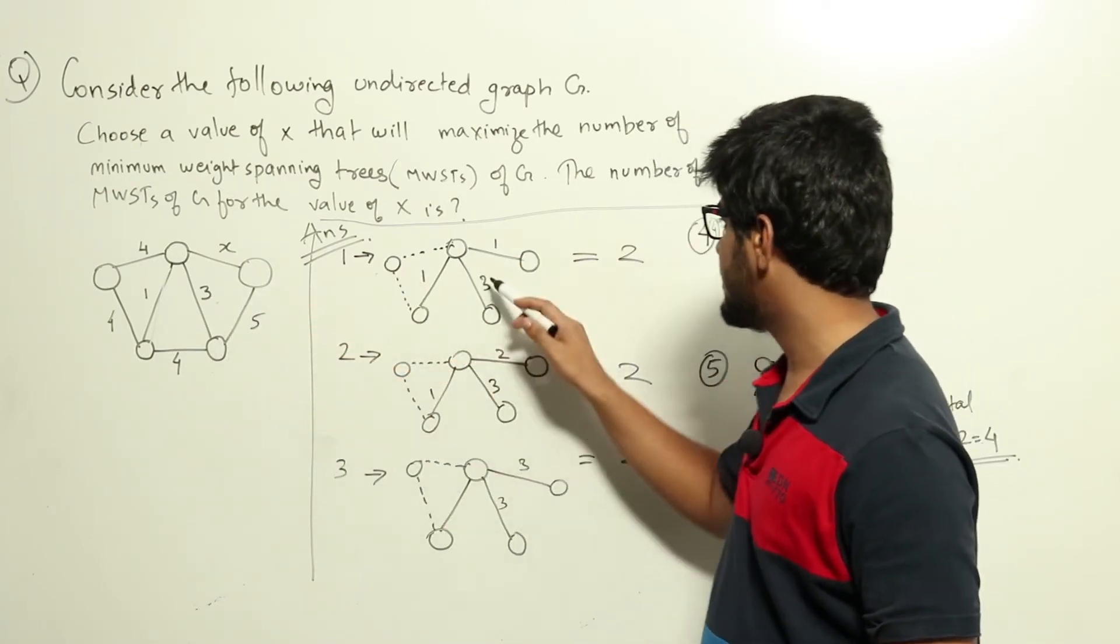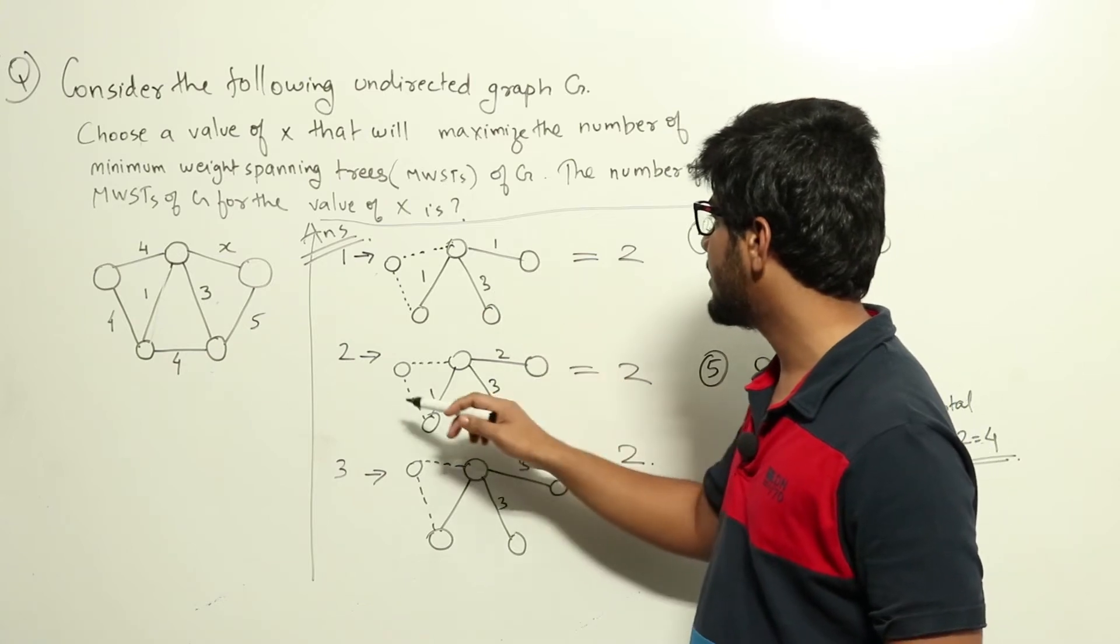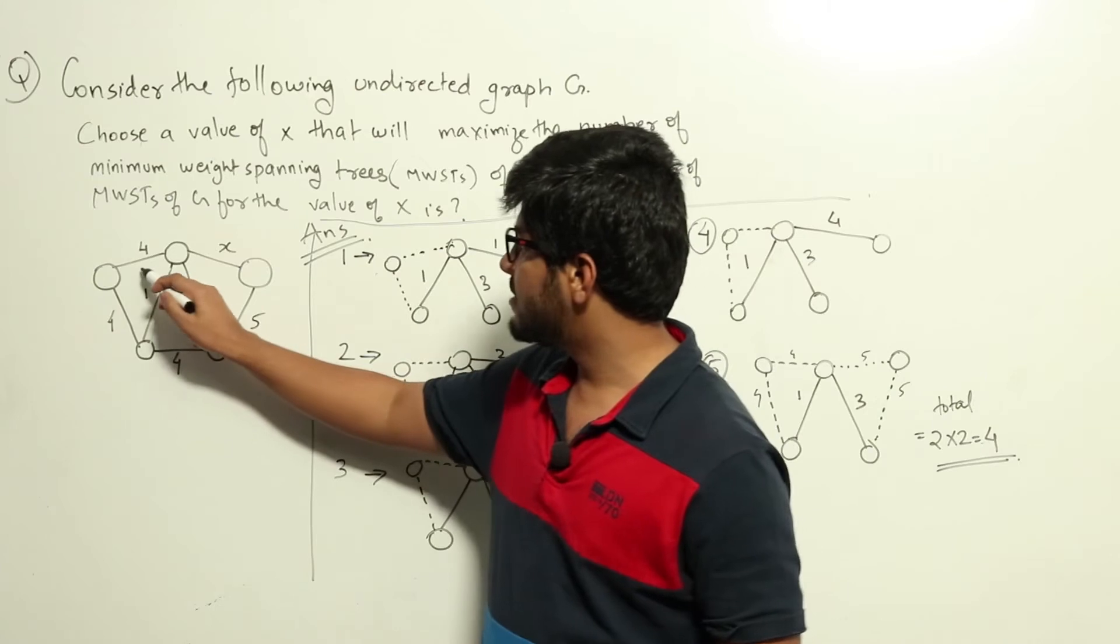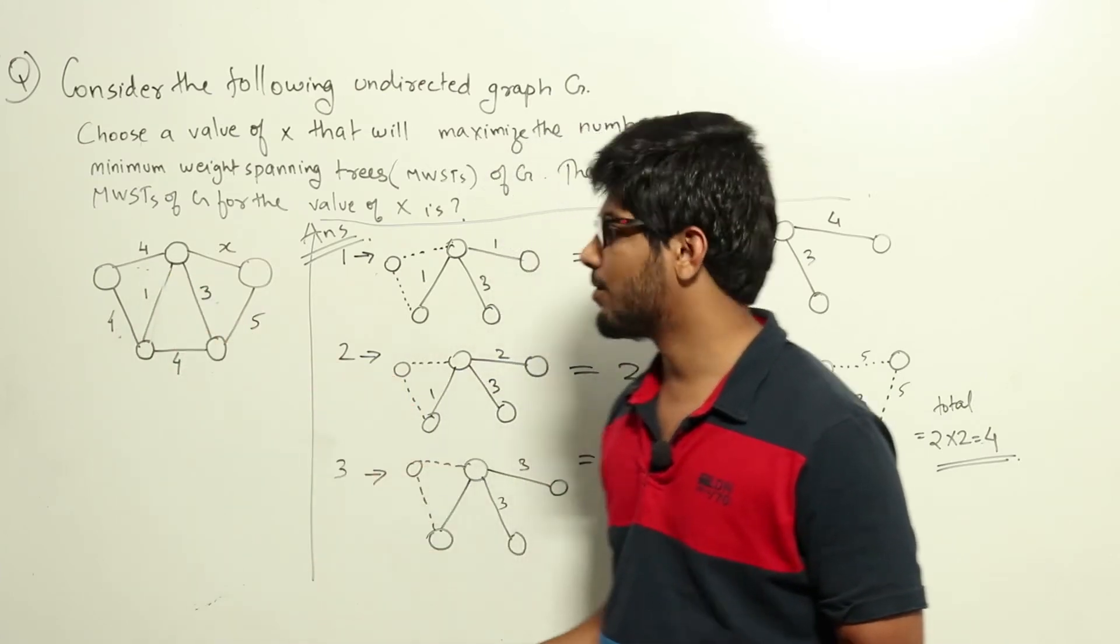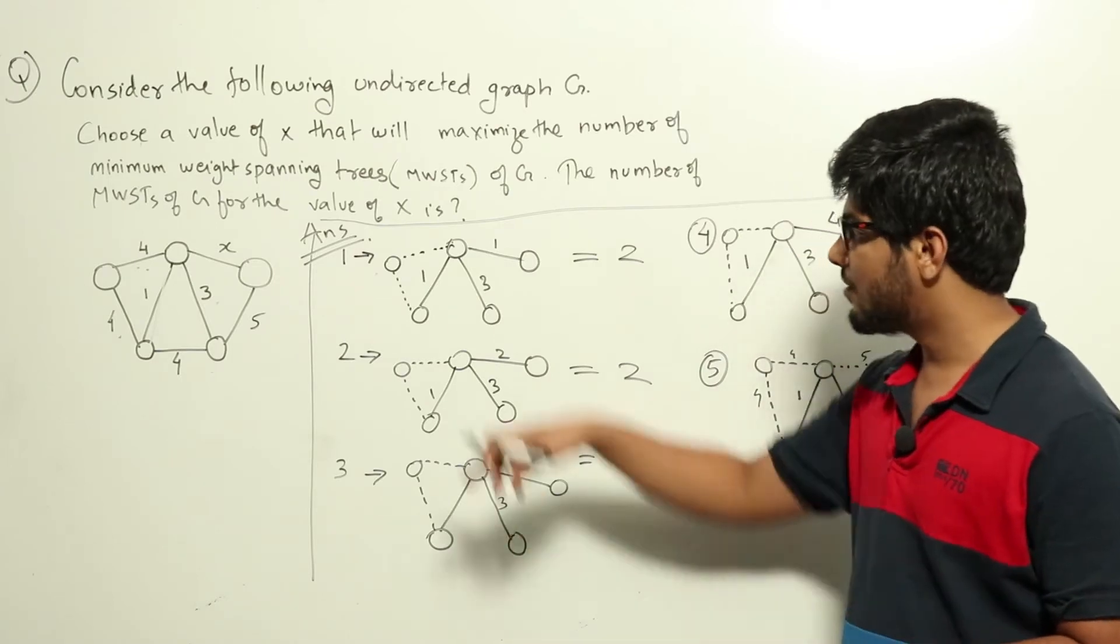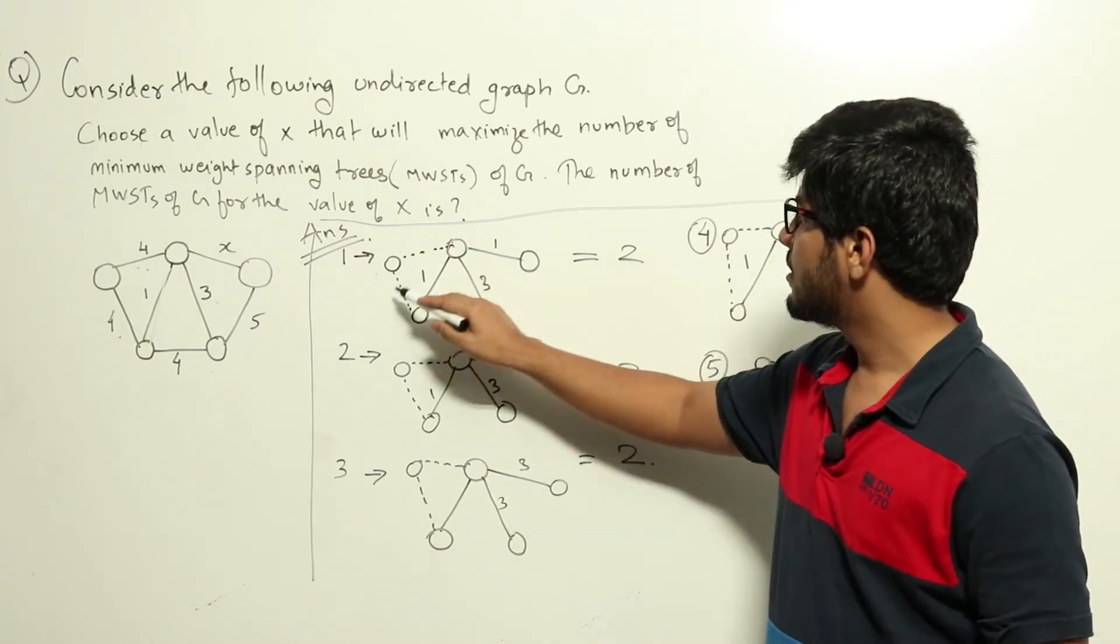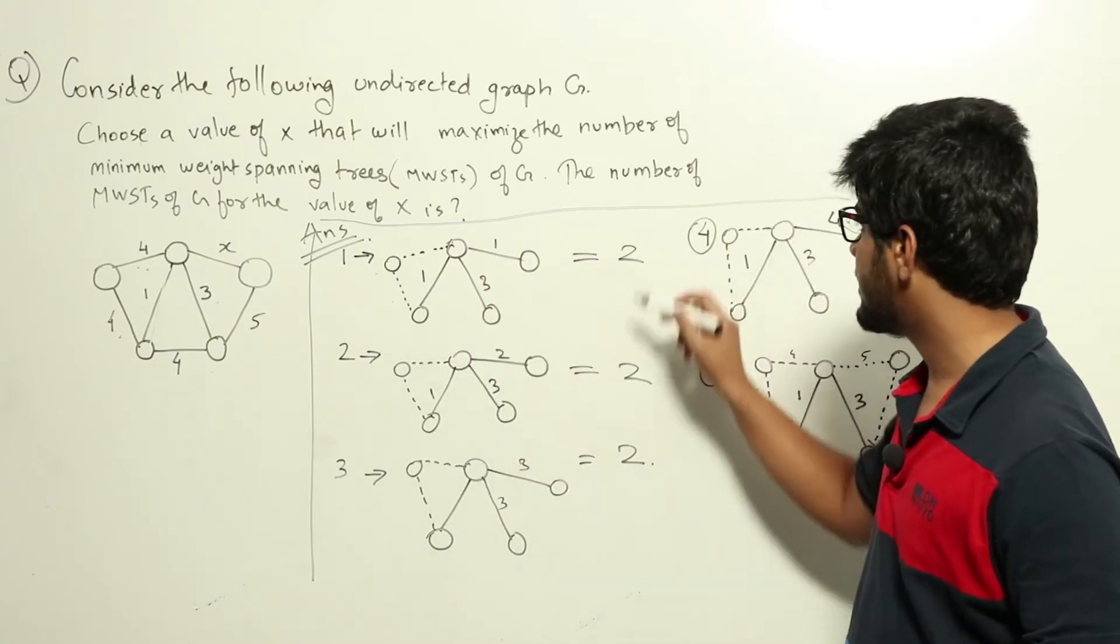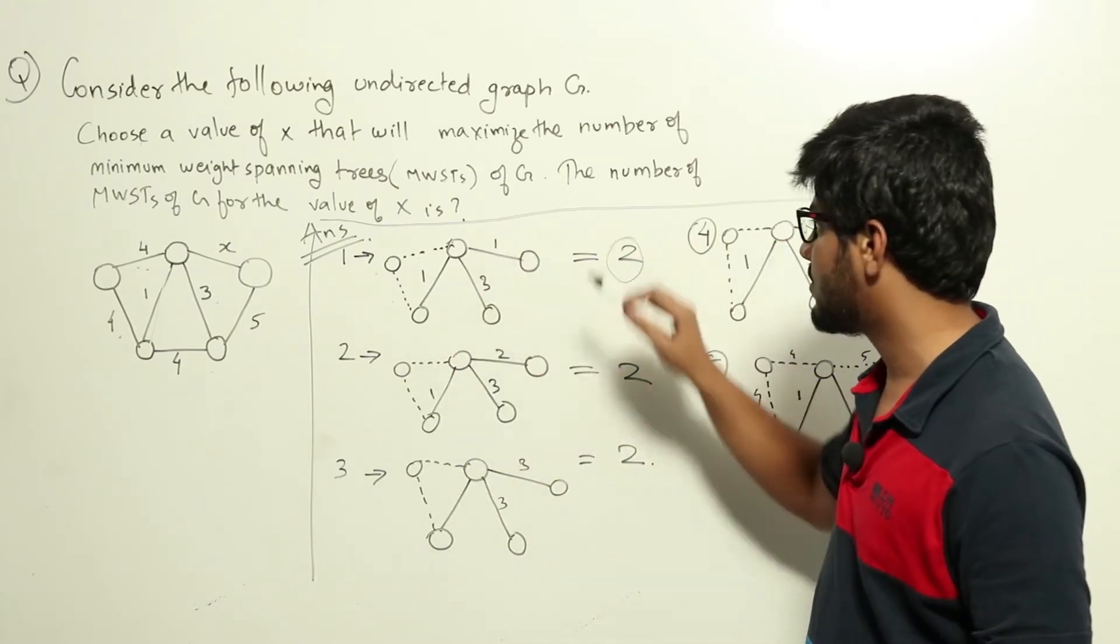And next we will choose this edge starting with 3. And only this node will be remaining now. Now there are two edges possible here. These two are having values 4. Whichever we choose the minimum weight will be the same. Meaning that we can choose any of these two. I will get two different graphs based on which edge we are choosing. That is in this case there will be two graphs possible.